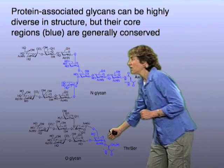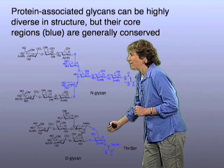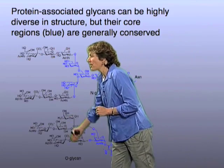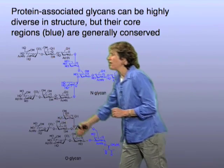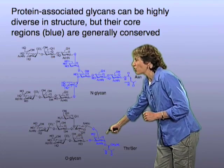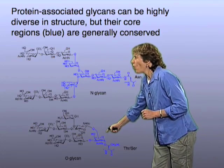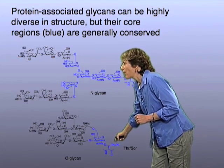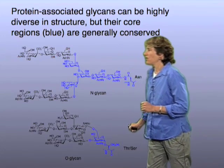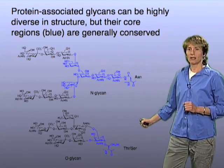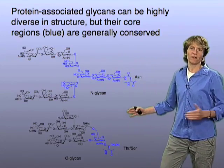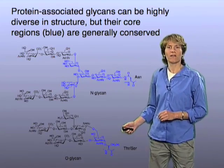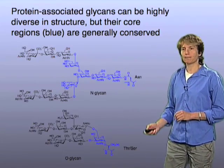Likewise, in the O-glycan family, there's a lot of diversity in the outer parts, but this sugar at the core is always conserved. It's always the same sugar linked in the same way to the protein backbone. So there are conserved and variable parts of these glycans.